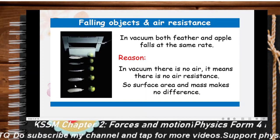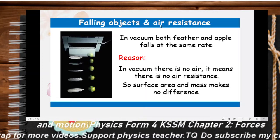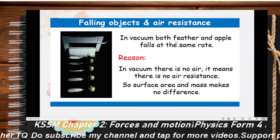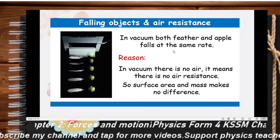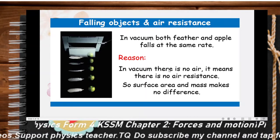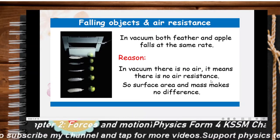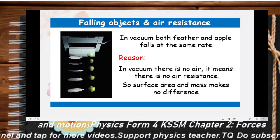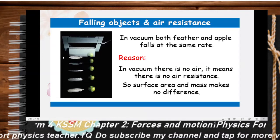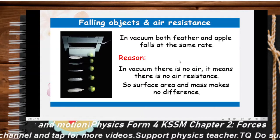Now let's relate falling objects and air resistance using the example of a feather and an apple. In vacuum, both the feather and apple fall at the same rate, the same as in the video observed. The reason is that in vacuum there is no air, which means there is no air resistance. With no air resistance, surface area and mass make no difference — the gravitational pull acting on the objects causes them to fall at the same rate.